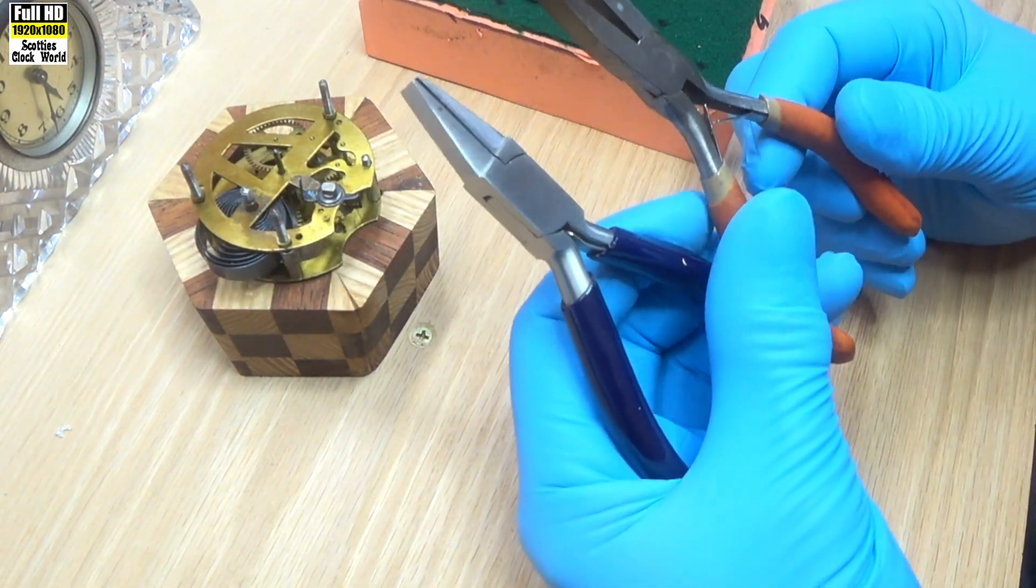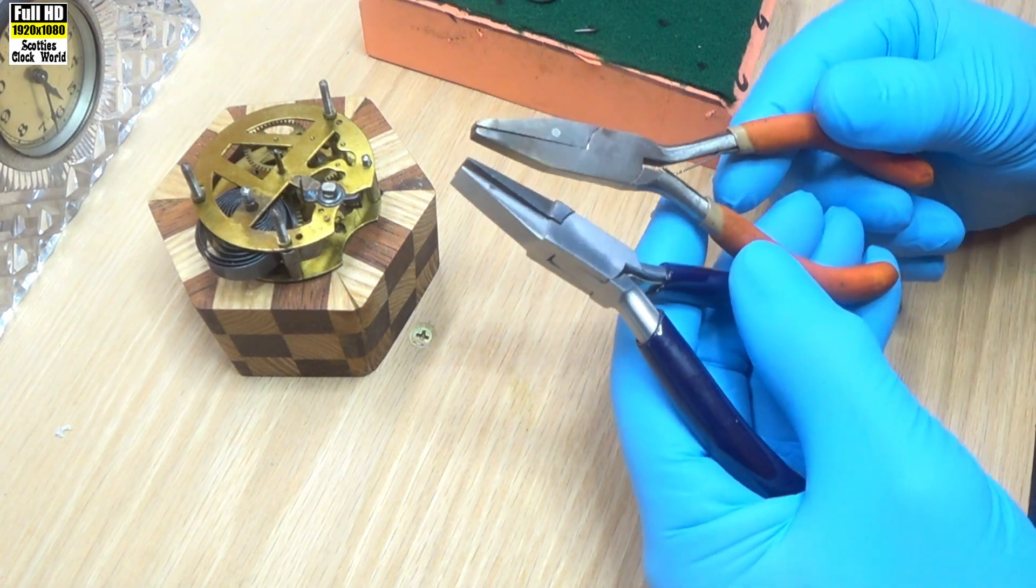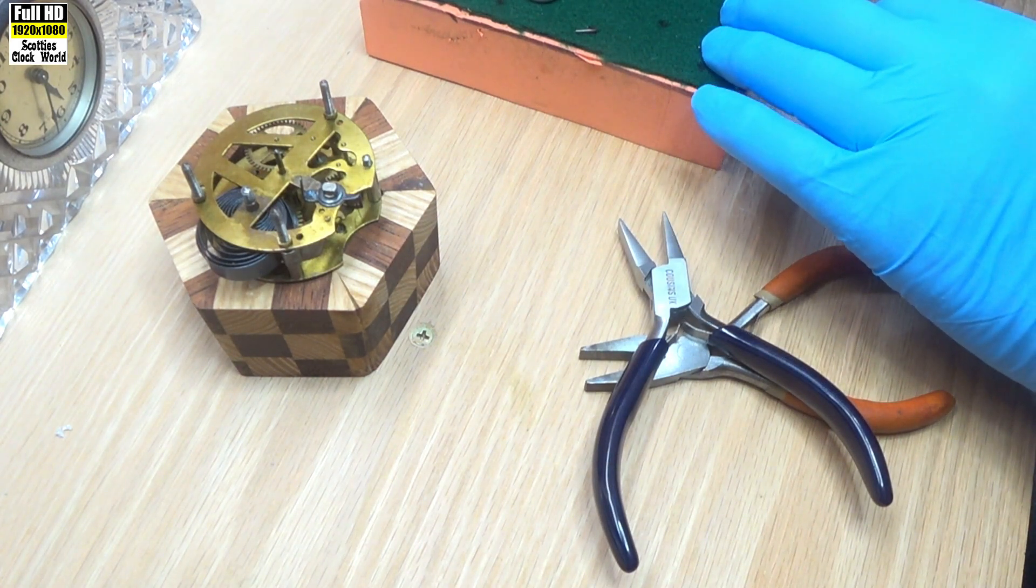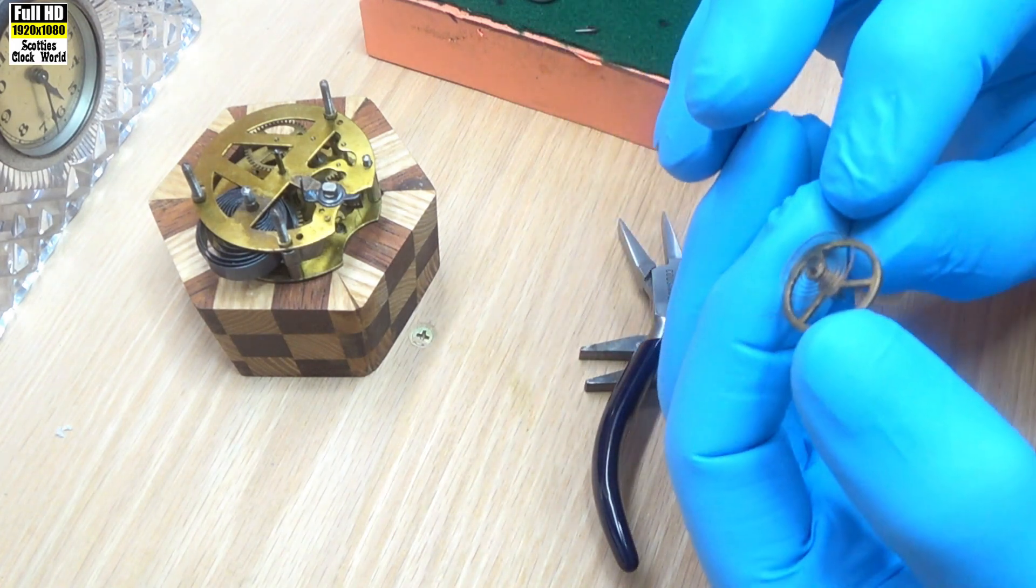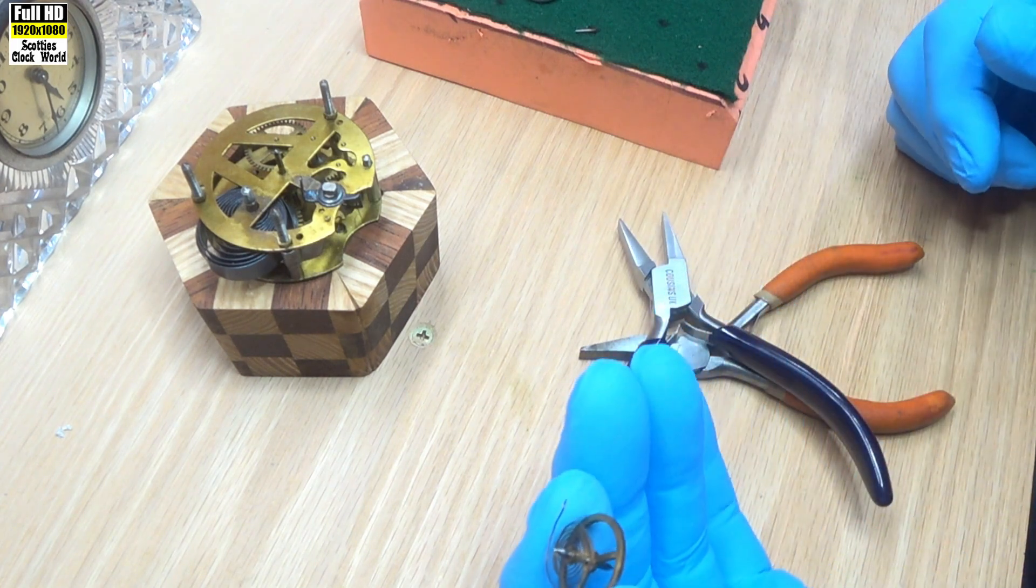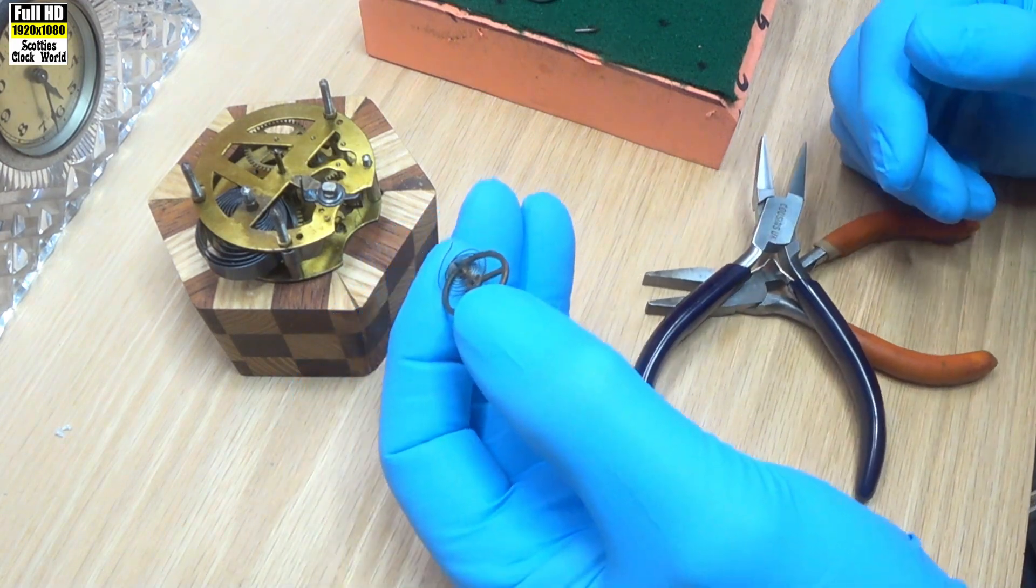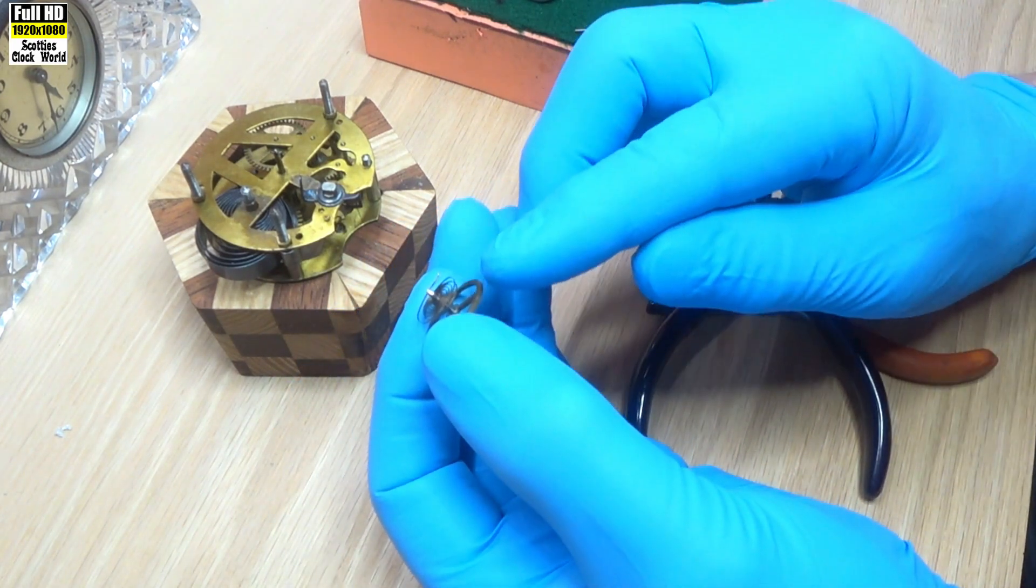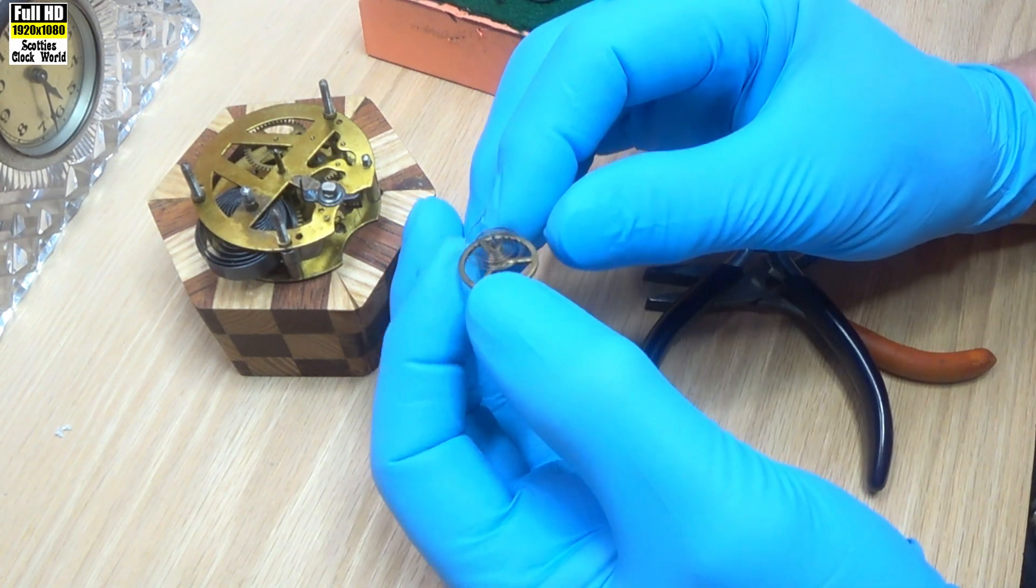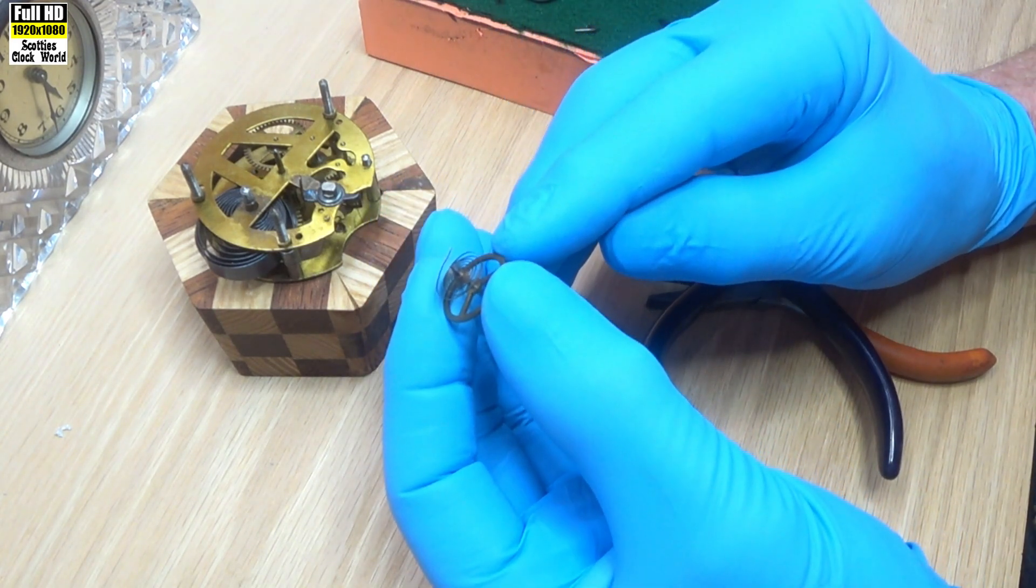We'll need two pairs of flat-jawed pliers, unserrated. We take up the balance wheel and have a look at the hairspring, see where the problem is. We'll support that to hold it still. Then we will start work with our pliers.